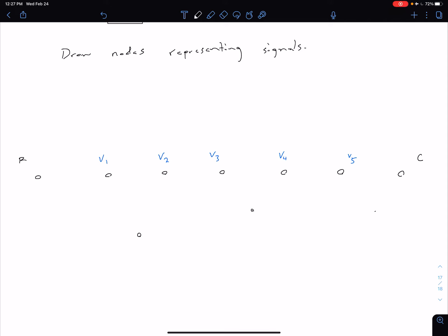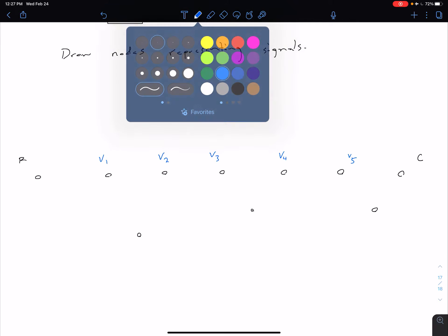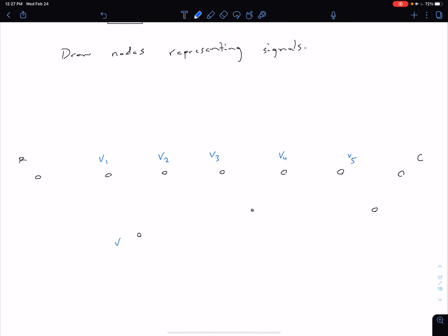And then finally, for node signal eight, that's below V5 and C. So let me finish labeling these then. So this is going to be our V6, this is going to be our V7, and this is going to be our V8.